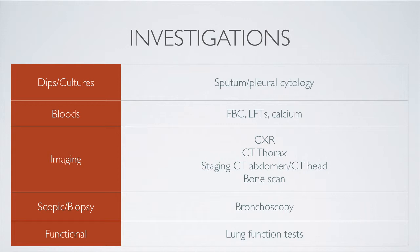There are lots of imaging tests that we could do. Starting at the most basic, this would include a chest X-ray, then going on to a CT of the thorax. If we found the tumor, we might consider doing further staging CTs of the abdomen and perhaps the head if there are any neurological signs and symptoms. We also may consider doing a bone scan. In certain types of tumors, we may consider doing bronchoscopy. Finally, we might consider doing lung function tests if the patient is going to go on to have some type of surgery to remove the tumor.